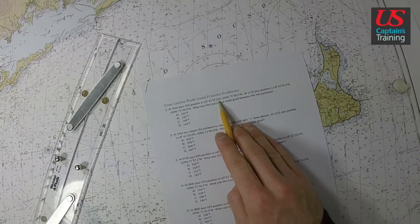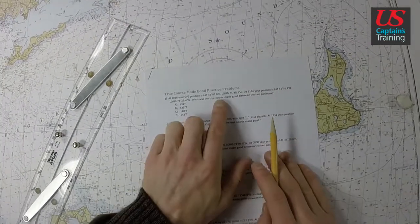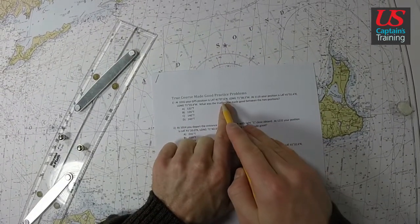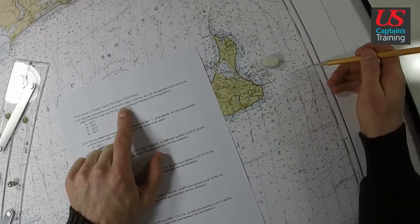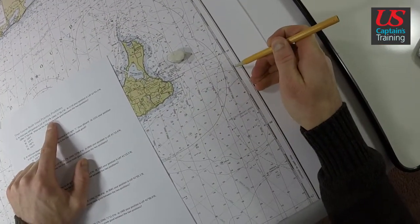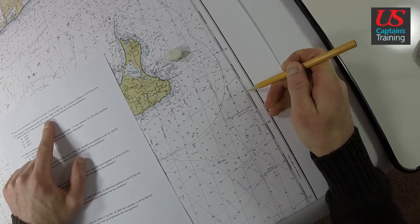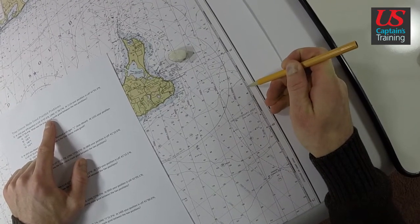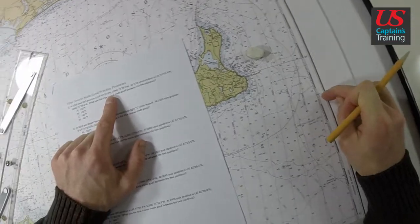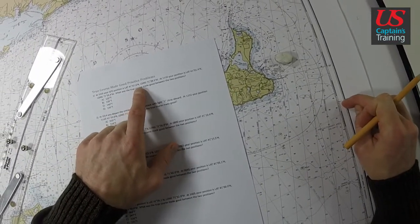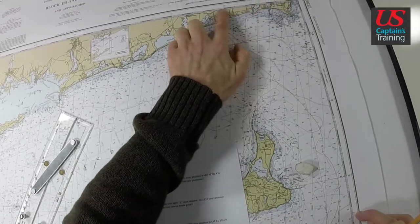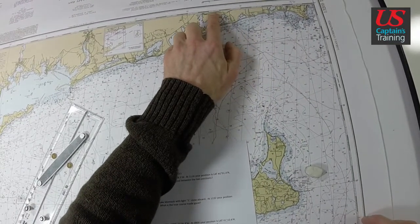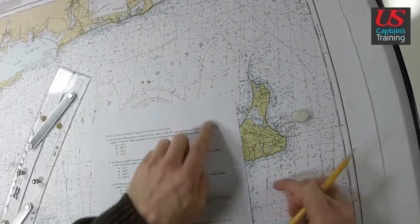First thing we do is find our starting position. I like to estimate it right off the bat, which is 41°07.6, so here's 10, 9, 8, 7.5, 7.6, so we're right here. And then longitude 38.5, so we've got 71°35, 36, 37, 38.5. We're going to be right in here.